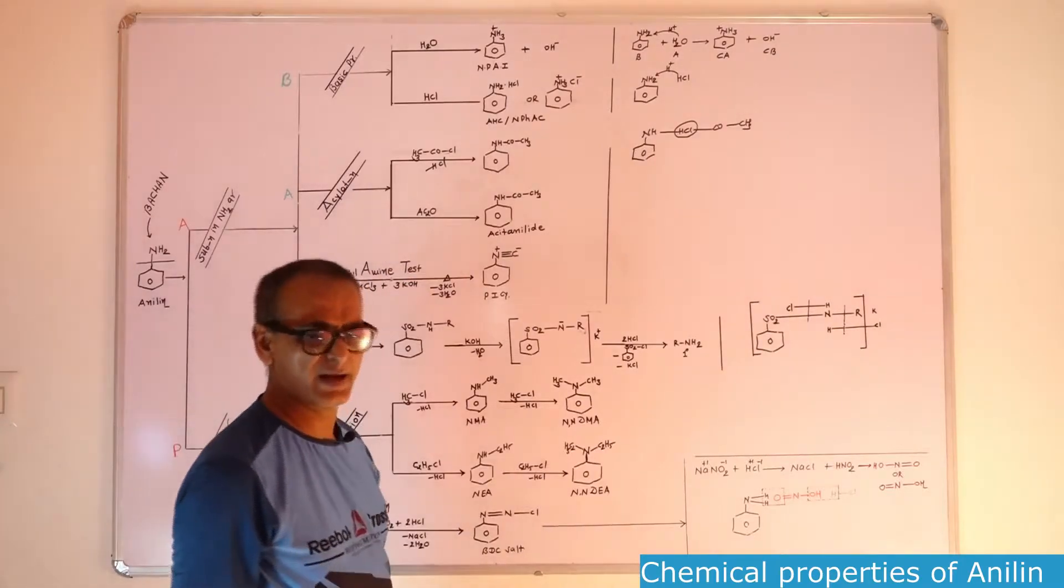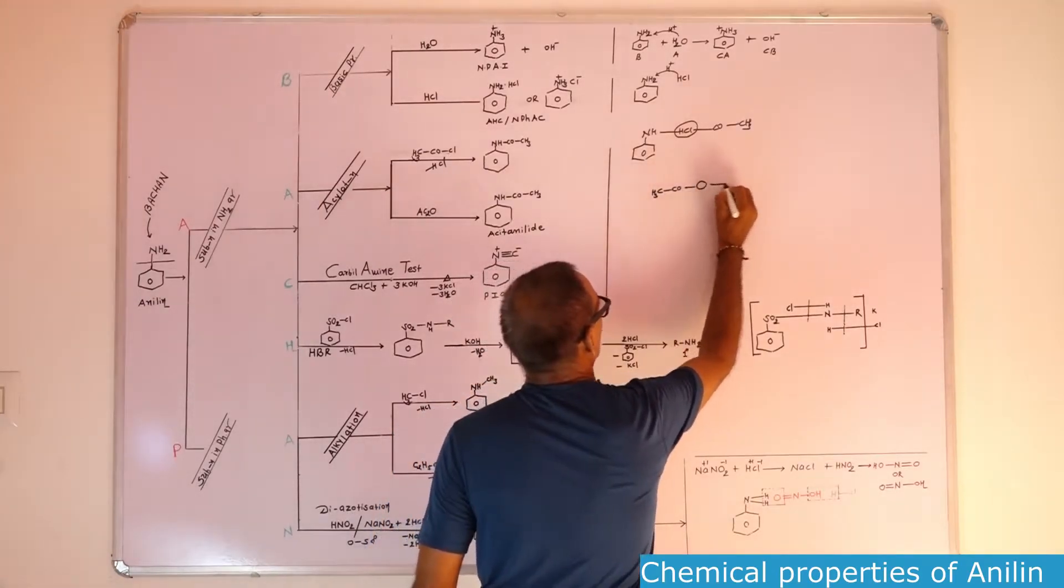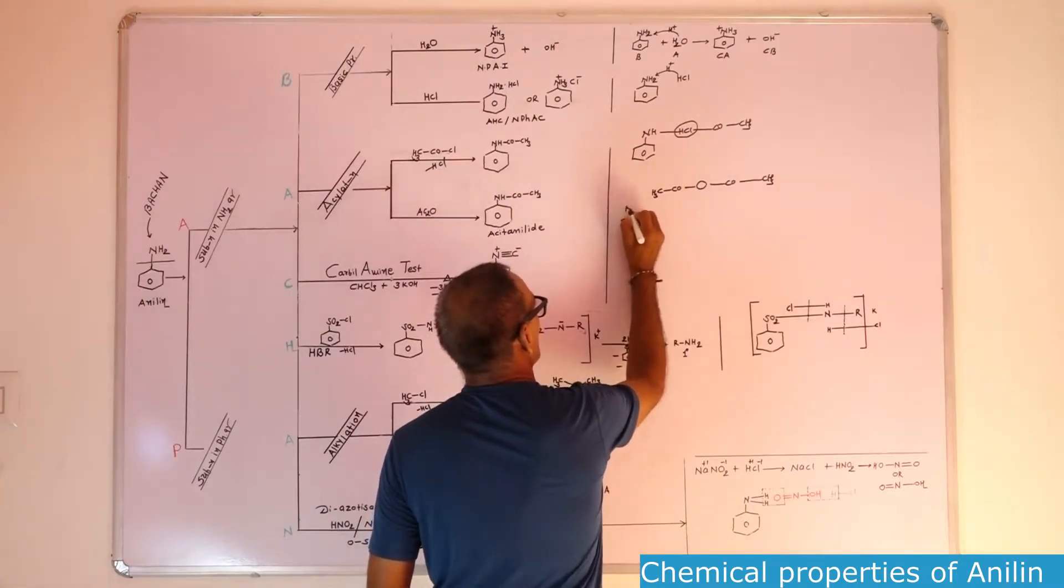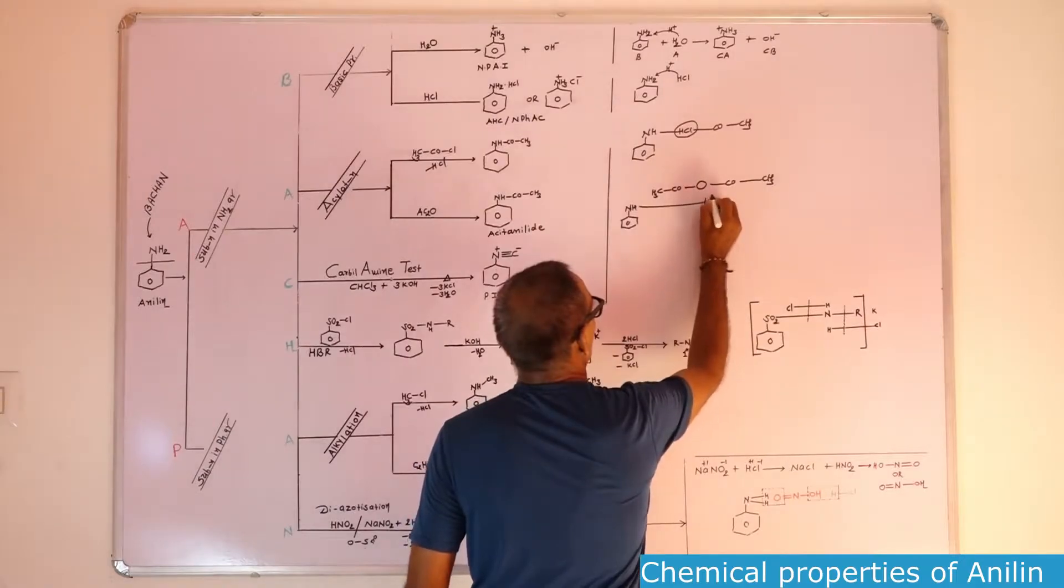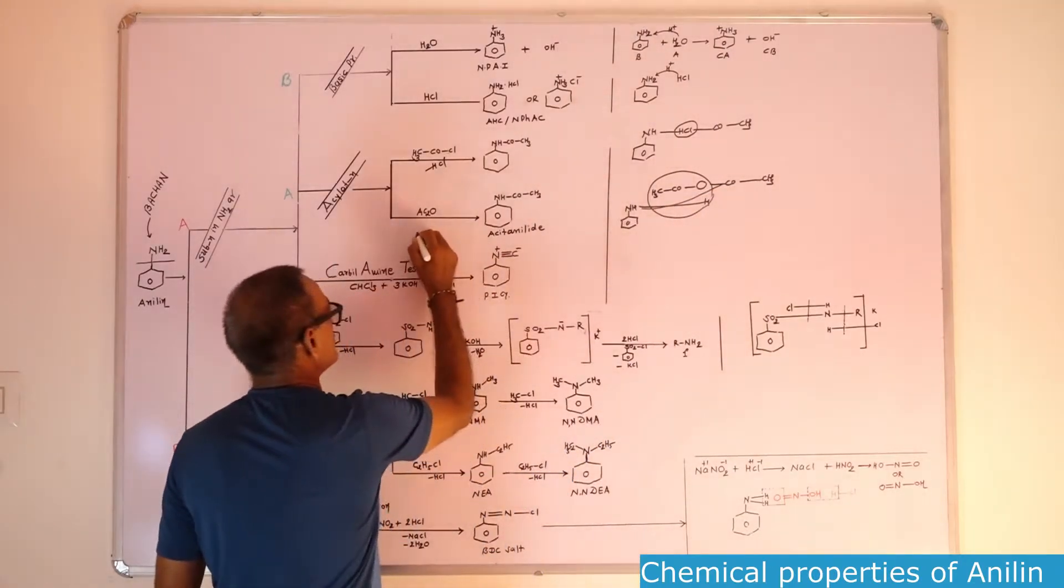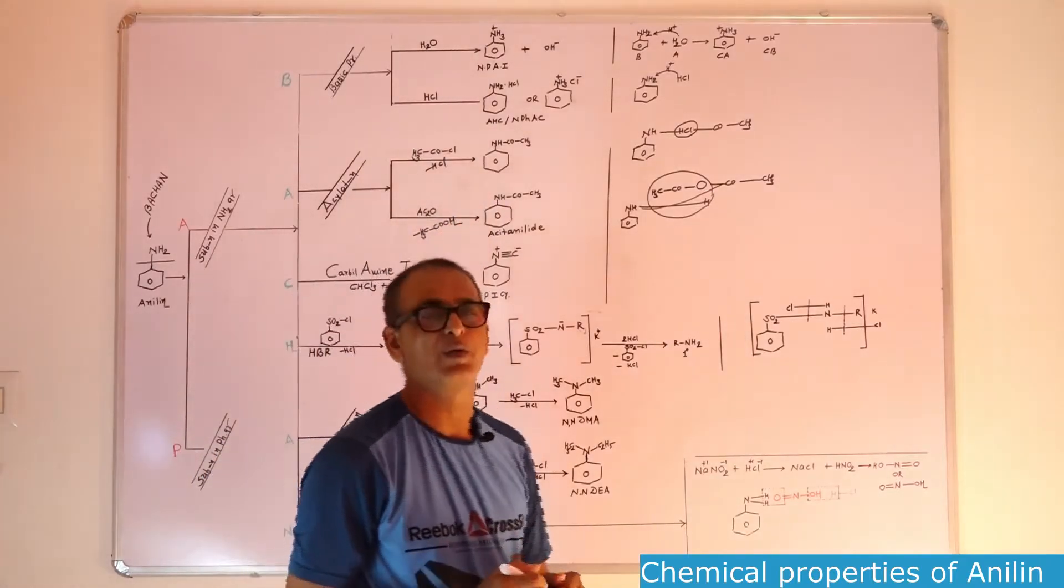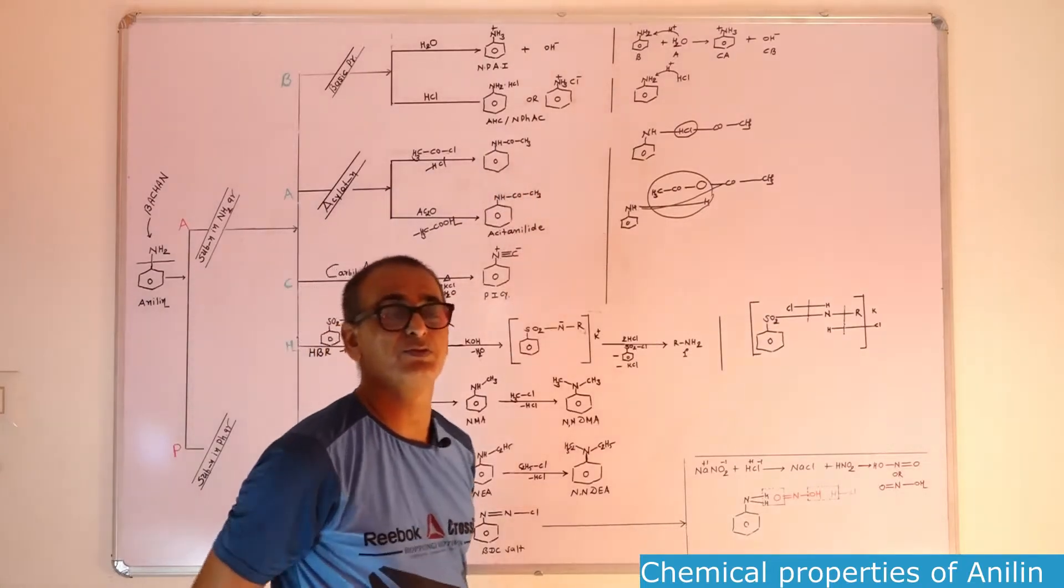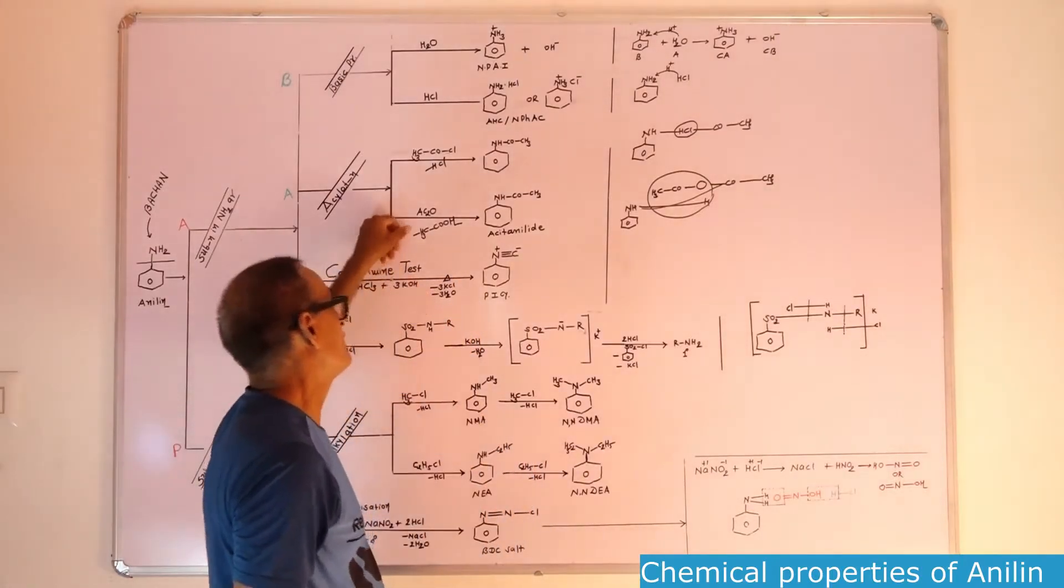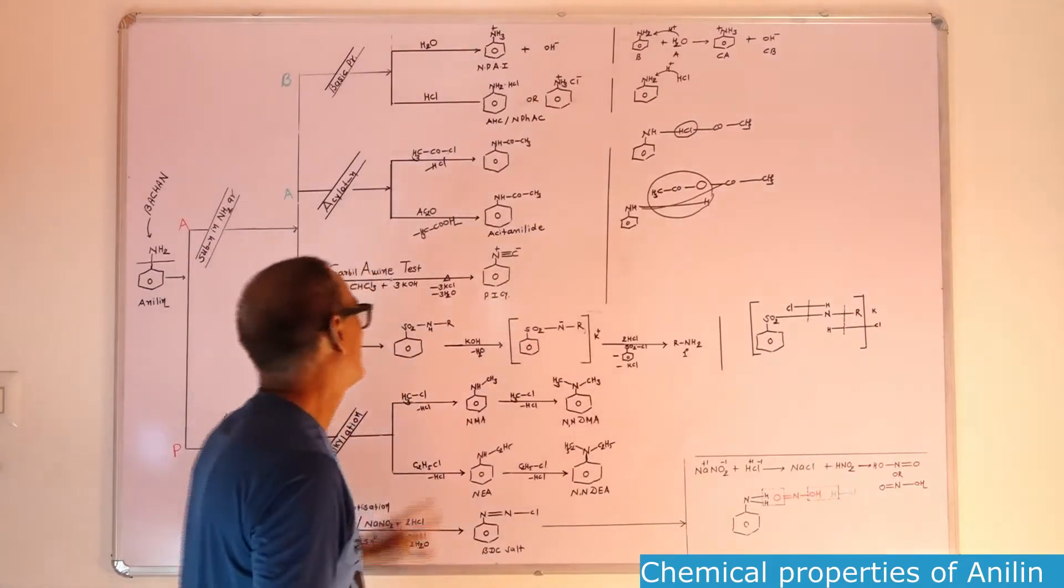Acylation can be carried out by using acetic anhydride also. Acetic anhydride formula is CH3CO-O-COCH3. Then benzene having NH, one hydrogen removed. This acetic acid will be removed as a byproduct and this COCH3 will directly attach to the nitrogen atom. During the acylation, our main product will be acetanilide. If we use acyl chloride as acylating agent, HCl will be removed as a byproduct. If we use acetic anhydride as acylating agent, then acetic acid will be removed as a byproduct.